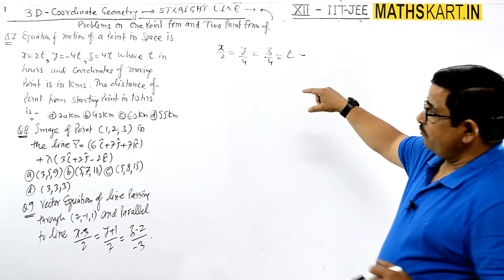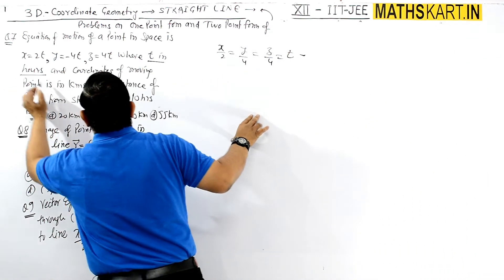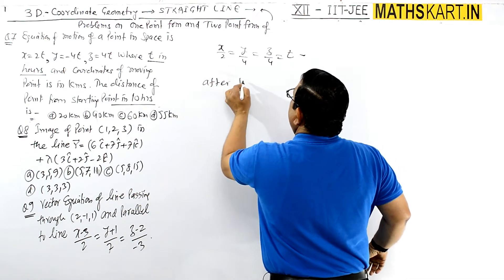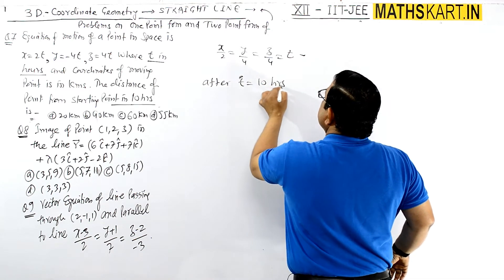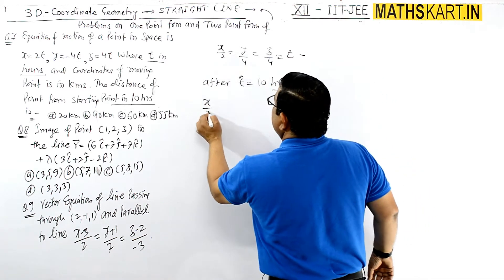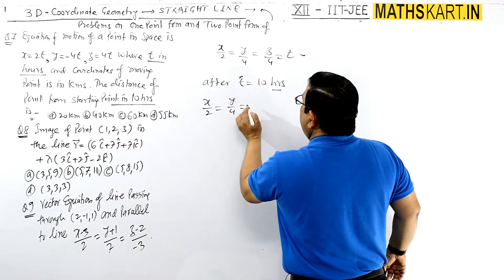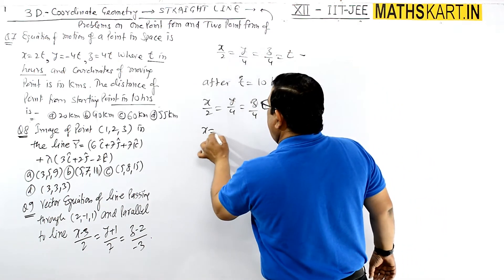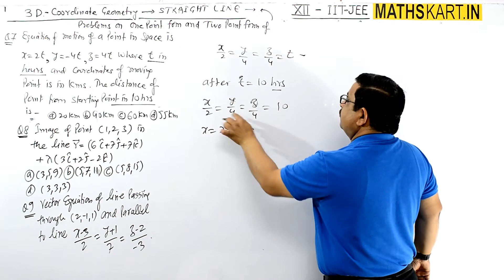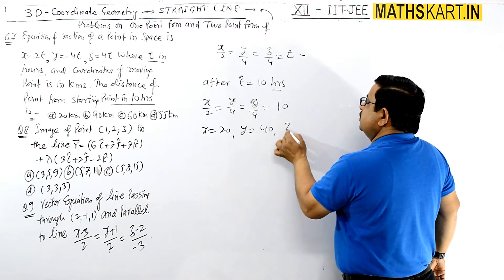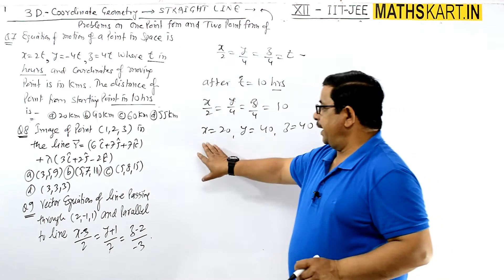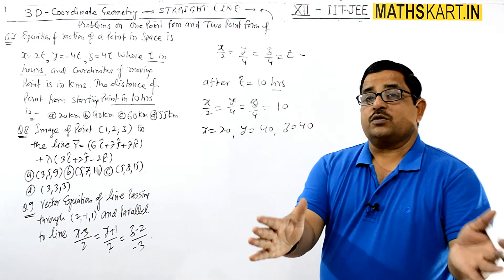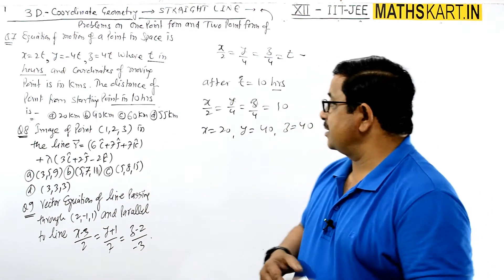After 10 hours, at t equals 10, x/2 equals y/4 equals z/4 gives: x becomes 20, y coordinate becomes 40, and z becomes 40. So this is the position after 10 hours — x coordinate at 20, y at 40, z at 40.